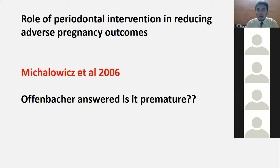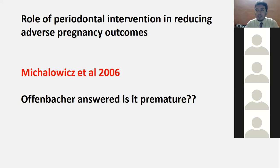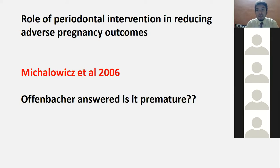Regarding periodontal intervention in reducing adverse pregnancy outcomes, Michalowicz 2006 gave a negative result — stating that SRP, flap surgery, or any periodontal treatment for pregnant females would not reduce adverse pregnancy outcomes. However, Offenbacher in an editorial review the same year said that conclusion was premature. Michalowicz 2006 and Sinaes 2009 are the two key negative association studies.